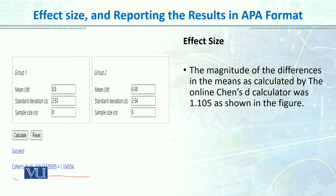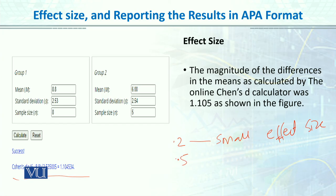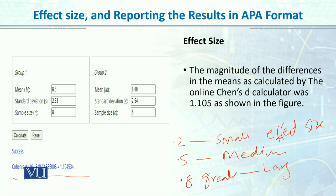For Cohen's D, a standard criteria is already given. If the Cohen's D value is 0.2, or between 0.2 and 0.5, it is a small effect size. If the value is between 0.5 and 0.8, we say it is a medium effect size. And if the value is greater than 0.8, then we say it is a large effect size. So: value around 0.2 or lower than 0.5 is small; 0.5 and greater but lower than 0.8 is medium; and greater than 0.8 is a large effect size.